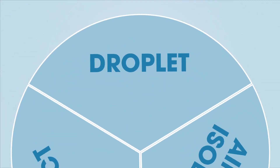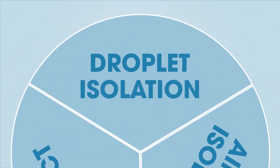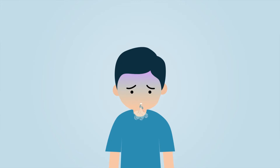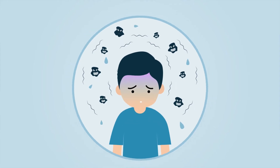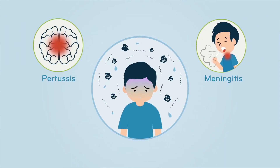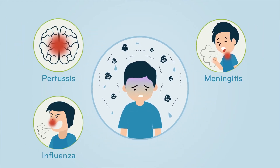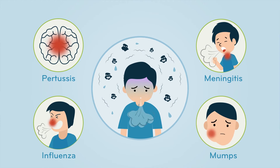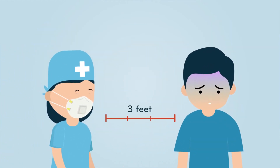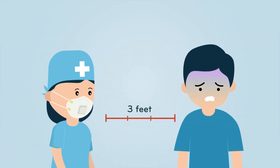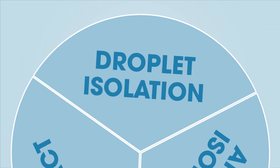Second, droplet isolation is used when a patient has a known or suspected infection with germs that are transmitted by larger droplets, such as meningitis, pertussis, influenza, and mumps. A mask is required if working within three feet of these patients.